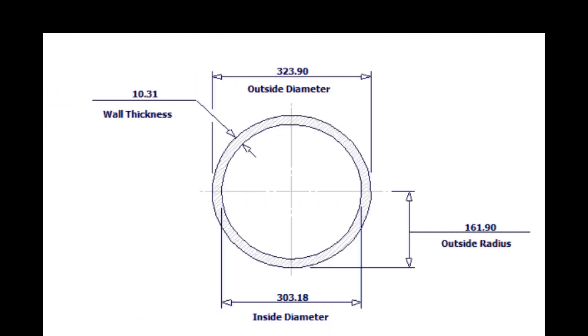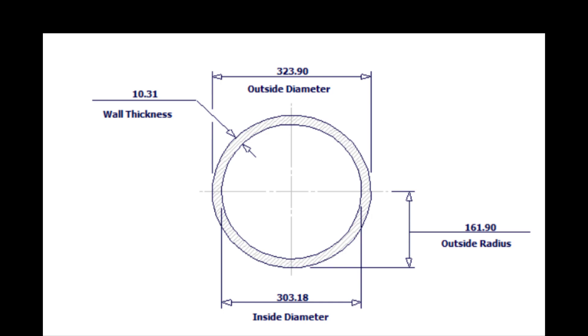Outside diameter of a 12-inch pipe is 324 millimeters. Let us calculate the circumference. Multiply 324 into 3.14. The answer is 1017 millimeters.